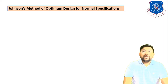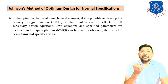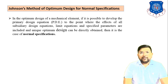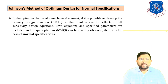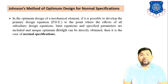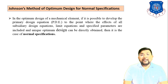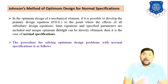Now, the Johnson Method of Optimum Design for Normal Specification. In the optimum design of a mechanical element, it is possible to develop the primary design equation to the point where the effects of all subsidiary design equations, limit equations, and specified parameters are included, and a unique optimum design can be directly obtained. That is the case of Normal Specification.